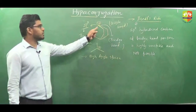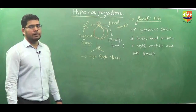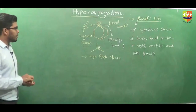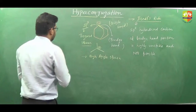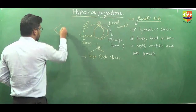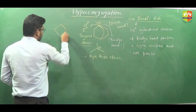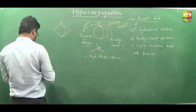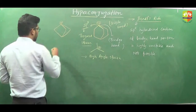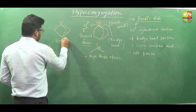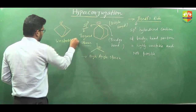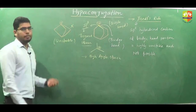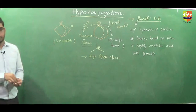That is what Bredt's rule is — this position is the bridge head position. And at bridge head position, sp2 hybridized carbon is highly unstable. One more example: this structure is also unstable and not possible — bridge head position, not possible.